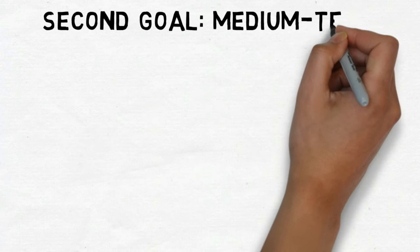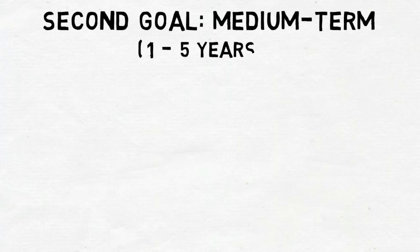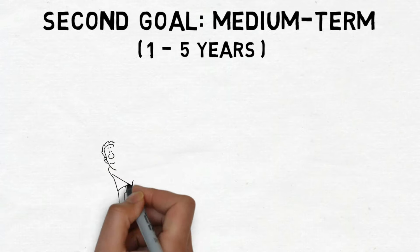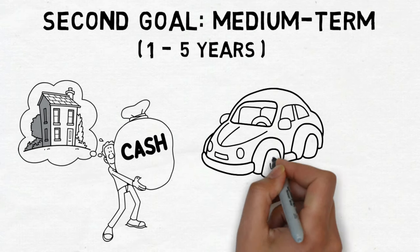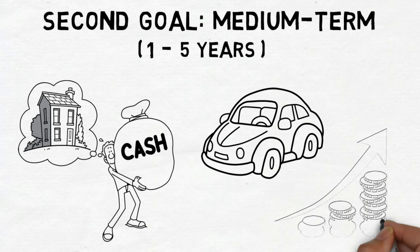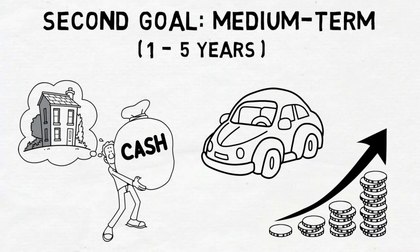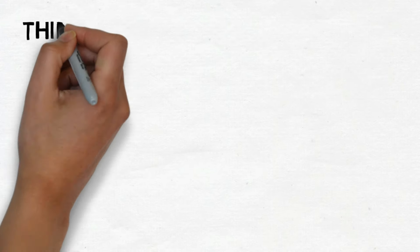The second goal should be of medium length, spanning between one and five years. These could be things like saving up for a house, getting enough money to buy your next car without a loan, or starting to invest so you have $100,000 in five years.